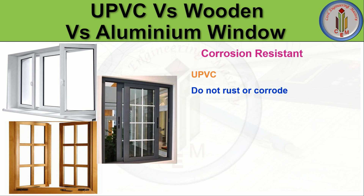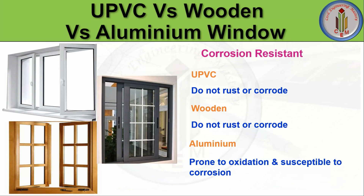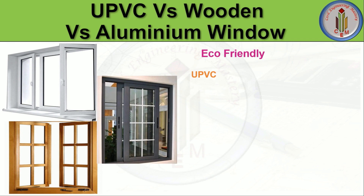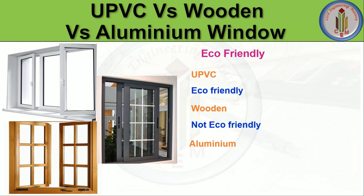Next is corrosion resistance. uPVC windows do not rust or get corroded. Wooden windows also do not rust or corrode. However, aluminium windows are prone to oxidation and susceptible to corrosion. Regarding eco-friendliness, uPVC windows are eco-friendly. Wooden windows are not eco-friendly since they depend on deforestation — trees must be cut to make them. Aluminium windows are also eco-friendly.